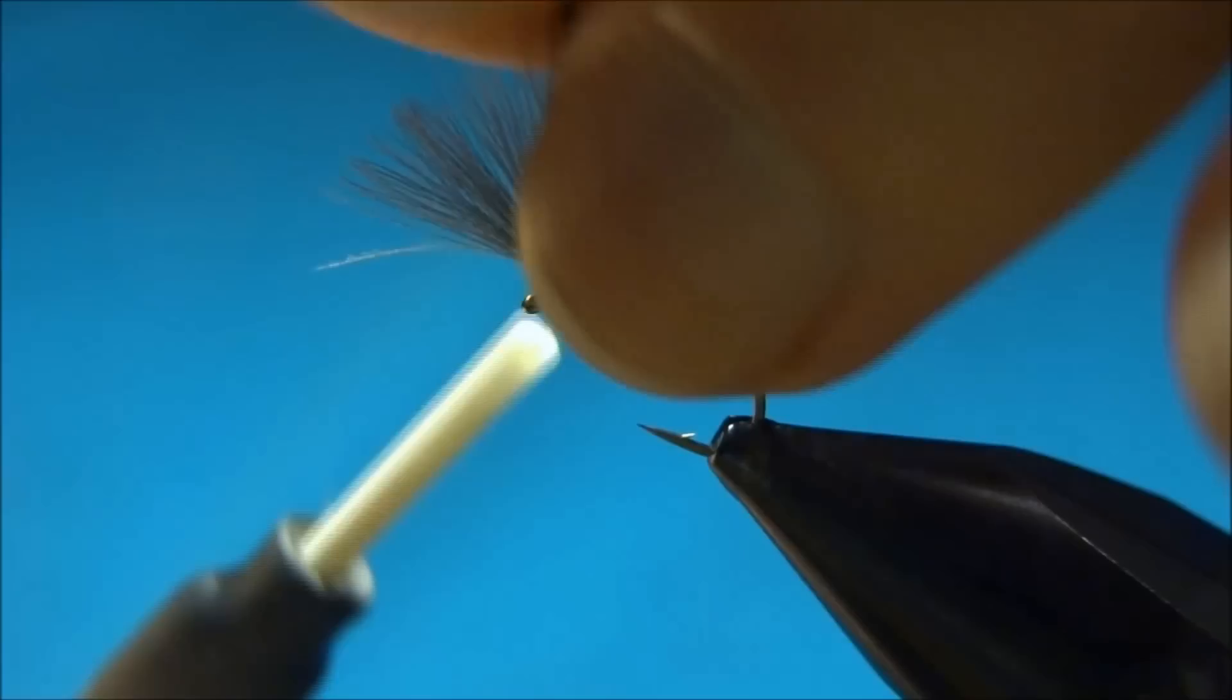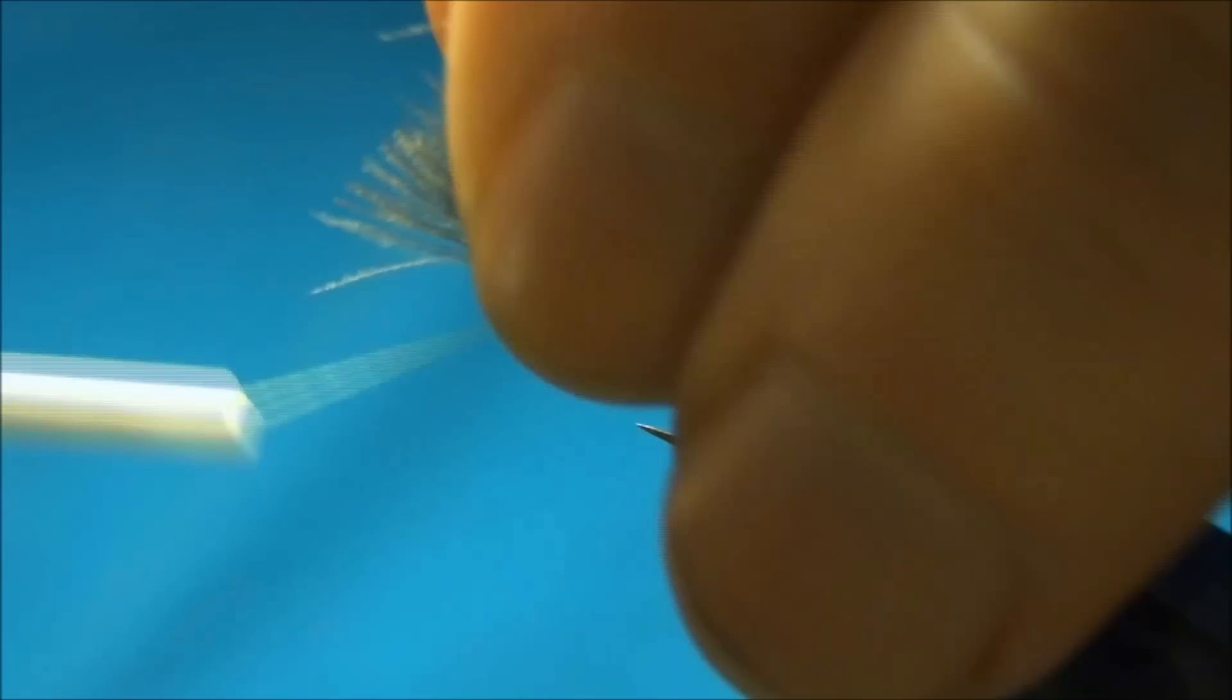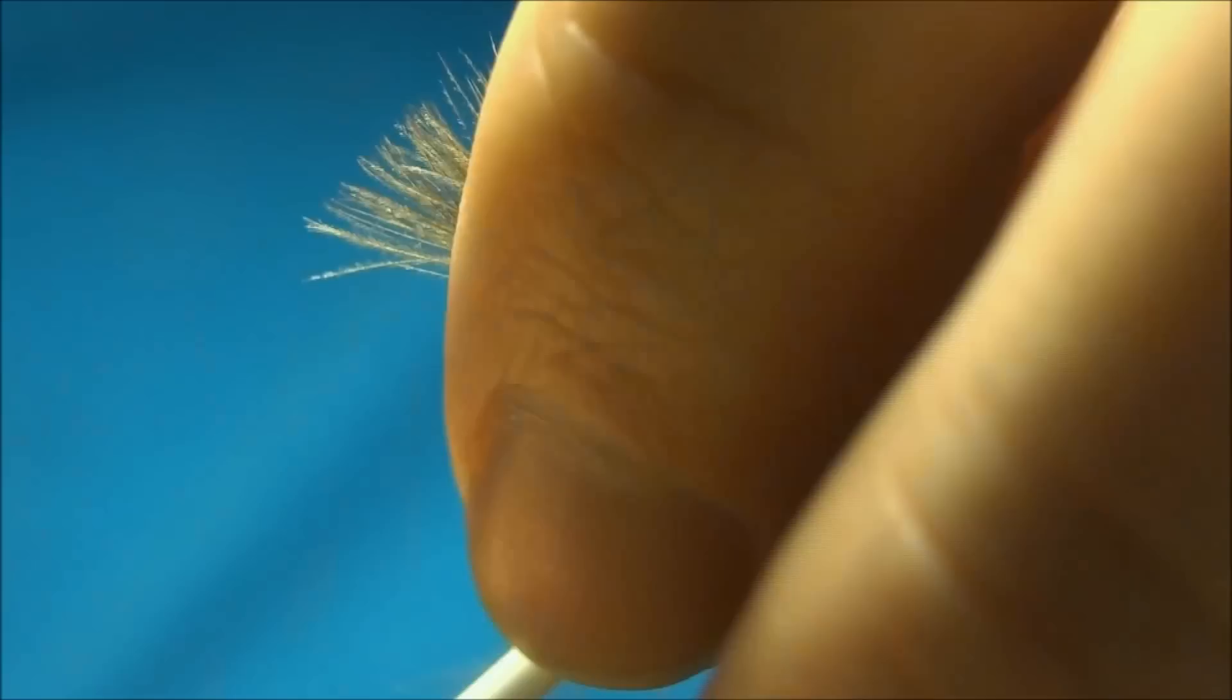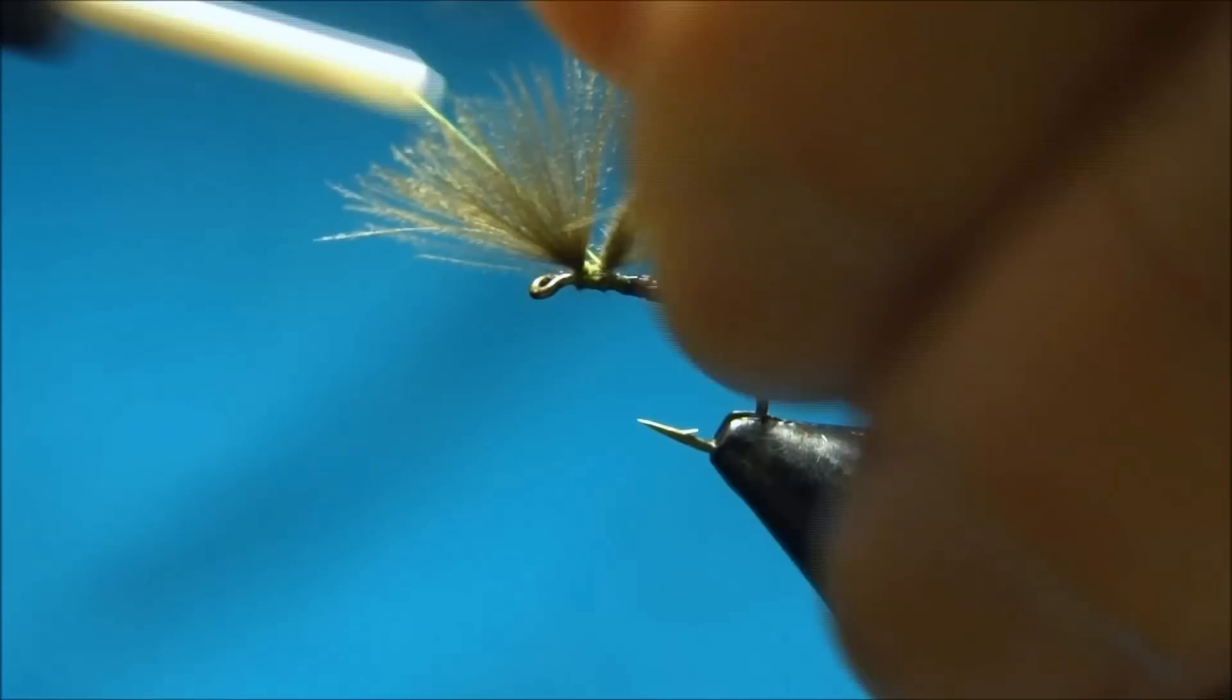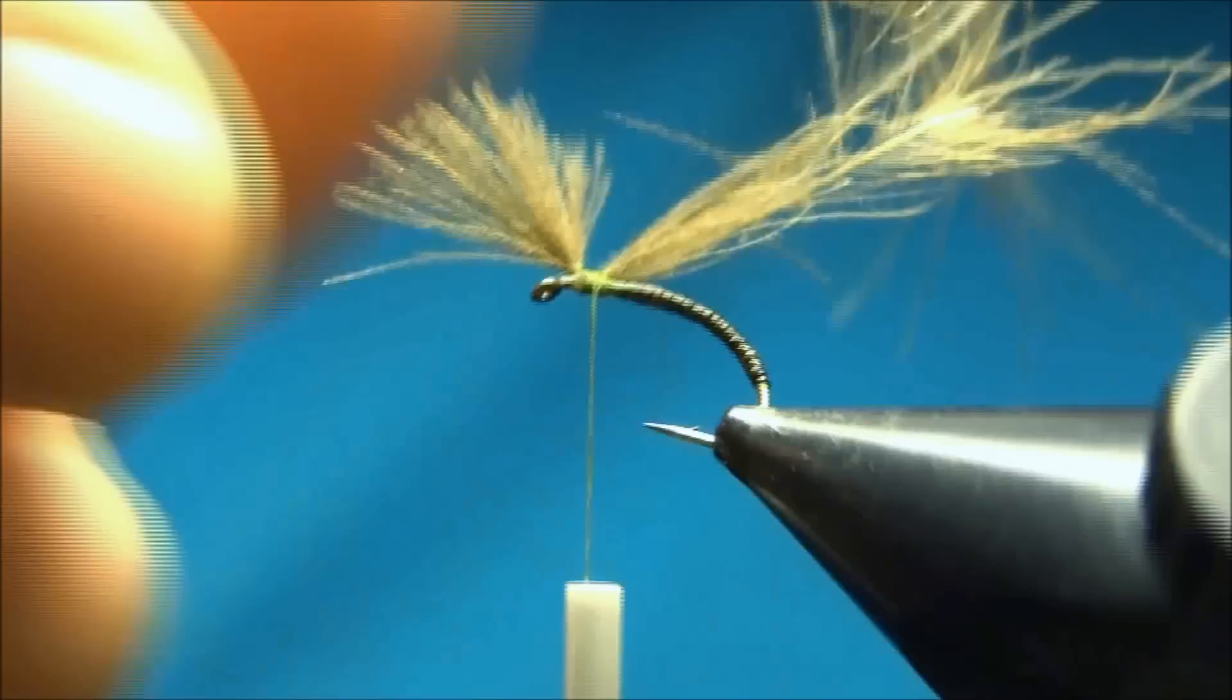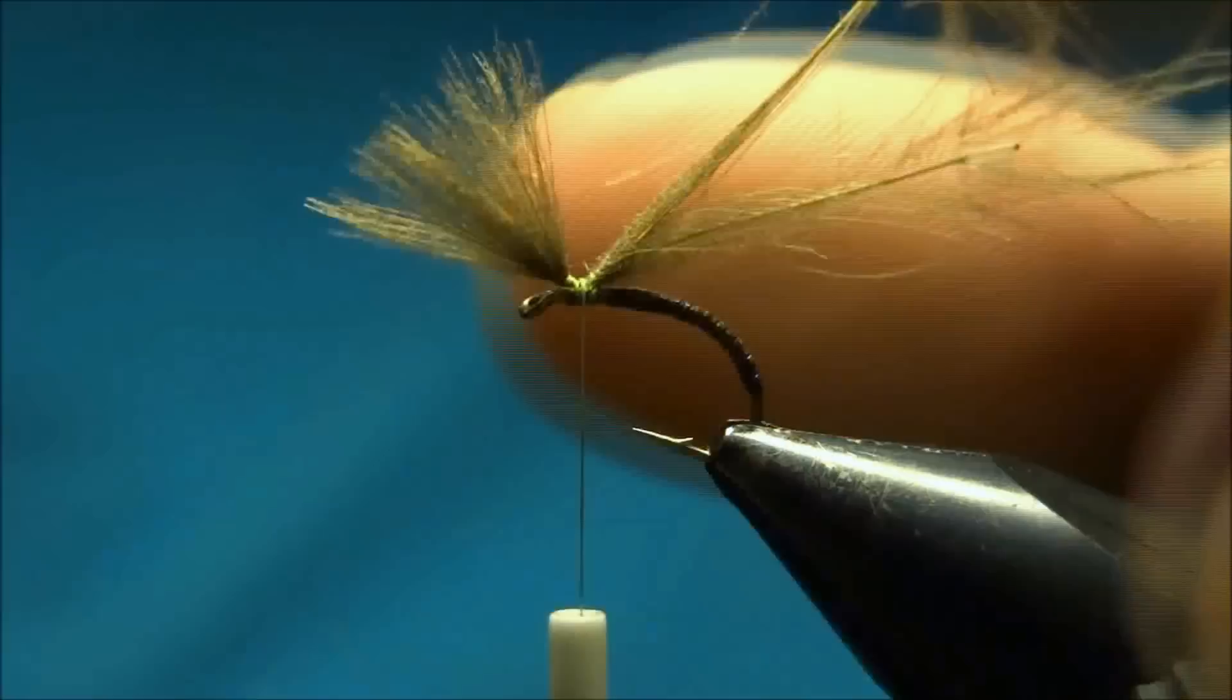Make some turns in front and over, then make a turn around the CDC and then one at the back so it stands up a little. There we go. Now that the CDC is tied in.